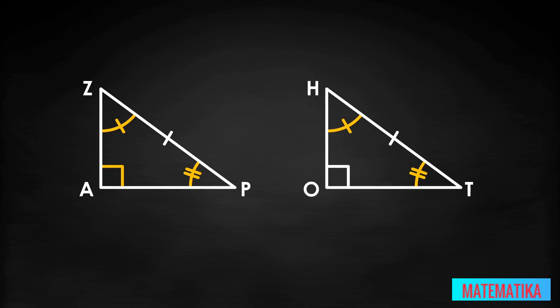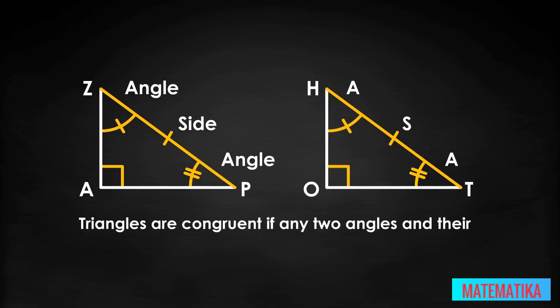So, if we know that all three angles are congruent, and we know that included sides between angles are congruent, then we have the angle side angle or ASA postulate. Recall that ASA tells us, triangles are congruent if any two angles and their included side are equal in the triangles.